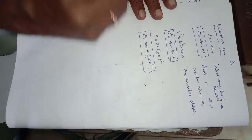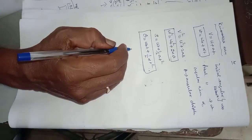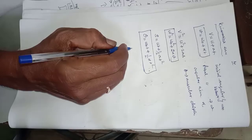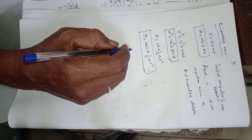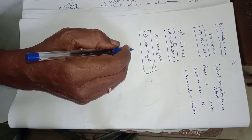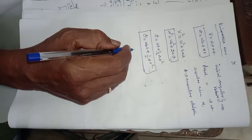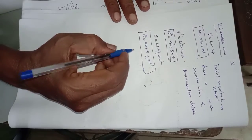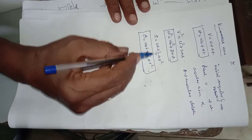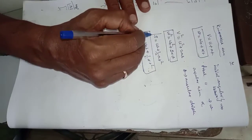Summary of the kinematics equations: v equals u plus at; v squared equals u squared plus 2as; s equals ut plus half a t squared.